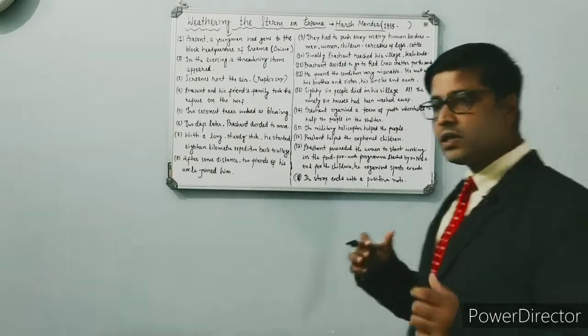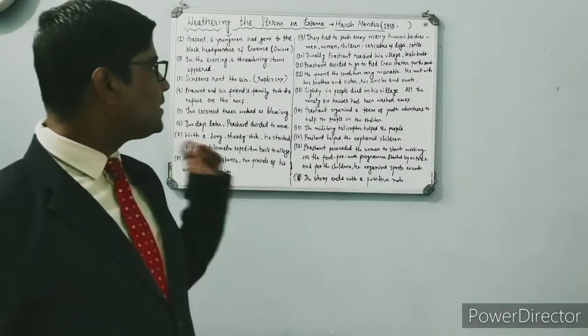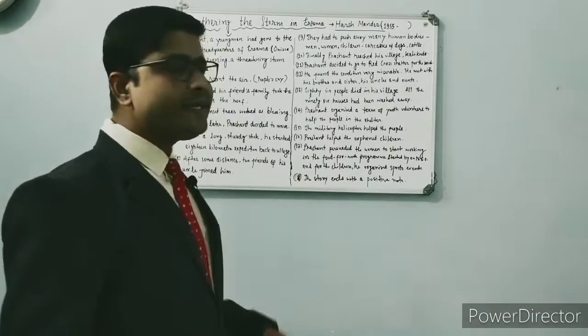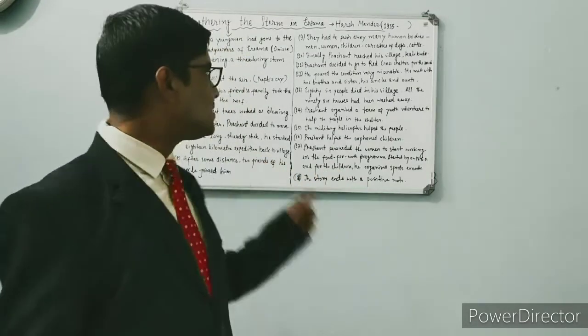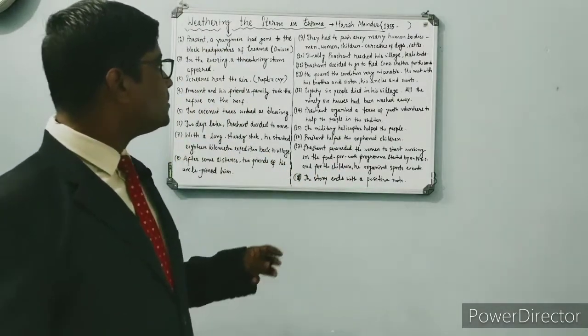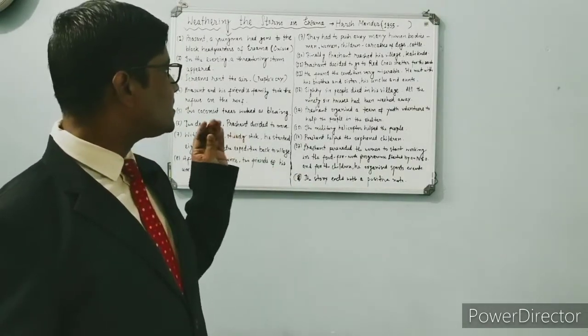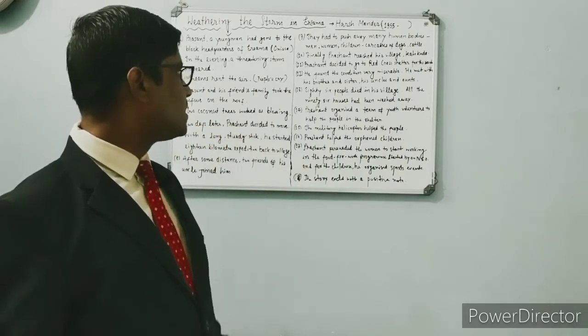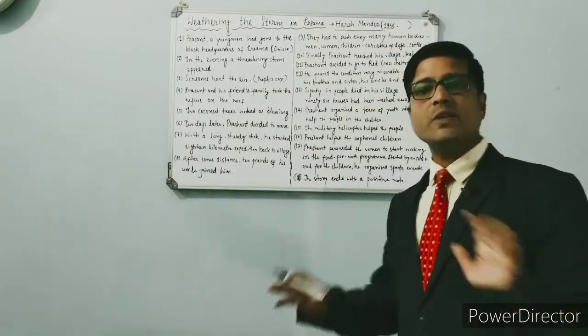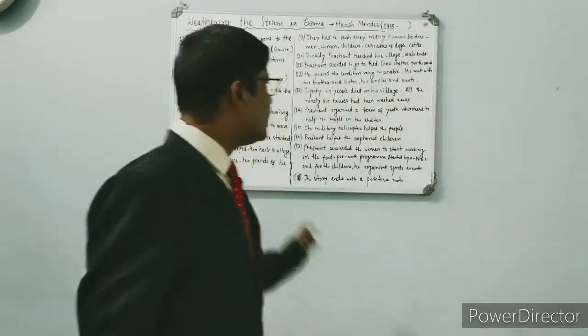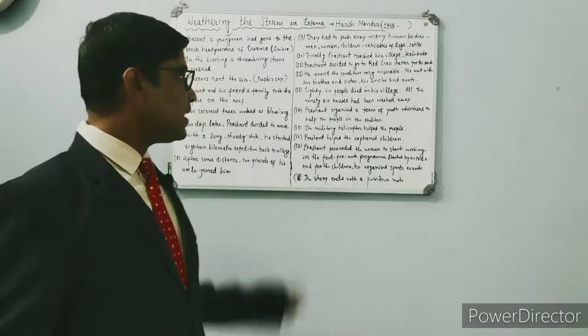When he met them, he listened to horrific stories one by one from each person. He was very emotional but started thinking as a young person how he could help them. He found out the truth: 86 people had died in his village, and all 96 houses had been totally washed away due to the storm. This was the whole situation of the village.